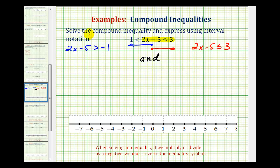So here to solve for x, we'll add 5 to both sides. So we'd have 2x, this would be zero, is greater than -1 + 5 is 4.